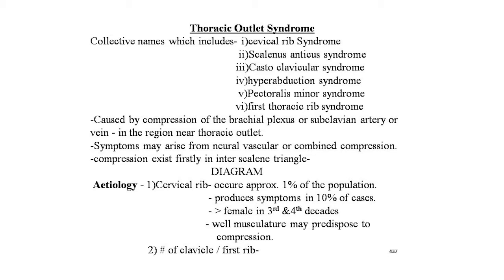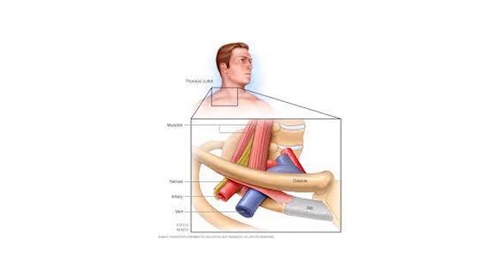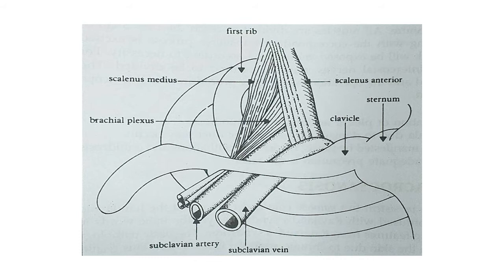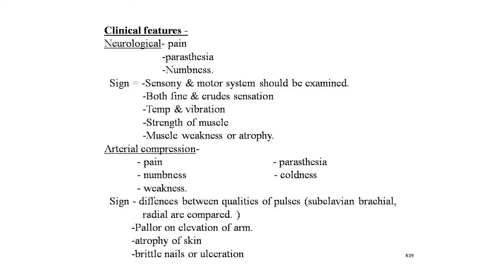Images show thoracic outlet obstruction of arteries and a cervical rib. The schematic diagram shows the anatomy: the first rib, scalenus medius, brachial plexus between scalenus anterior and scalenus medius, and the subclavian artery and vein under compression. Clinical features — neurological: pain, paresthesia, and numbness; sensory and motor systems should be examined including fine and crude sensation, temperature, vibration, and muscle strength. Arterial compression causes pain, numbness, weakness, paresthesia, and coldness; signs include pulse differences between subclavian, brachial, and radial pulses, pallor on arm elevation, atrophy of skin, and brittle nails or ulceration. Venous compression symptoms include pain, edema, venous distension, and cyanosis.